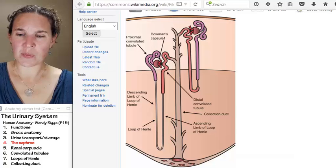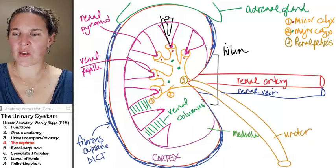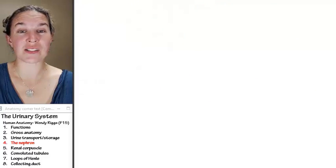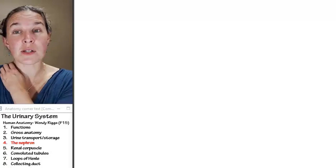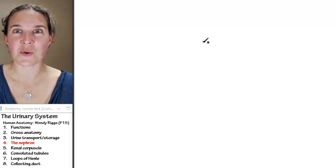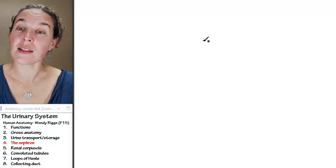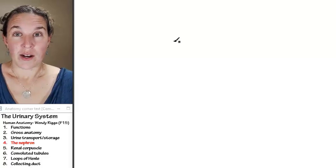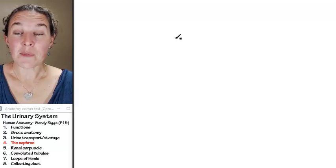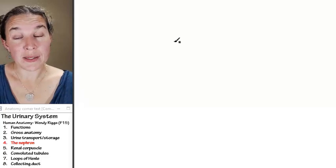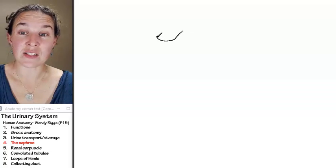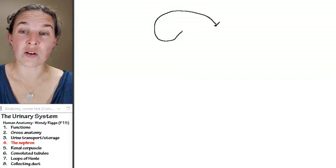So let's draw ourselves a picture of a nephron and make sure that we can label all the parts. This would be a phenomenal quiz question. Draw a nephron and label all the parts. All right, are you ready? I'm going to draw my nephron like a tube because guess what? That's what it is. It has a hollow center.